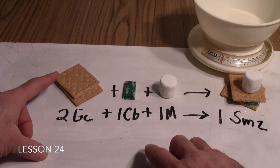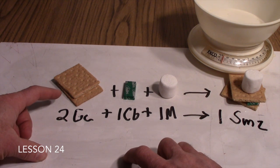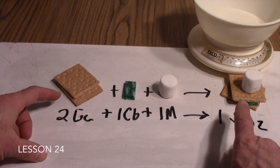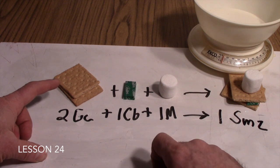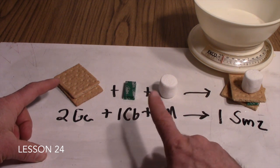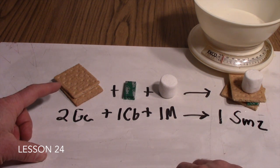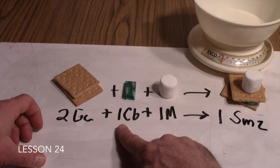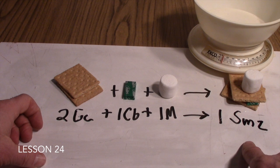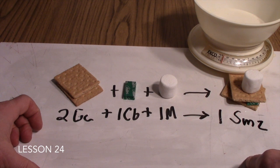In Lesson 22, your students were taught that they could take a known amount of ingredient measured in moles and predict the number of moles of product they could produce. They were taking moles and predicting moles. In Lesson 23, we took it one step further — we took a known amount of moles of ingredients and predicted a product in grams, converting moles into grams using a molar mass or formula weight.